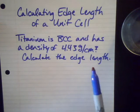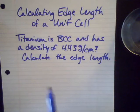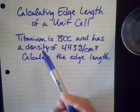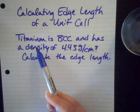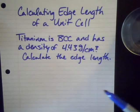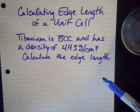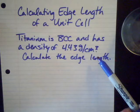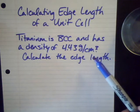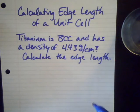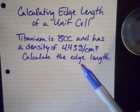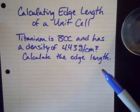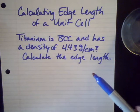So to calculate the edge length, we can solve problems that look like this. Titanium, which is Ti, is body centered cubic, and has a density of 4.43 grams per centimeter cubed. So grams per centimeter cubed, meaning our length times our width times our height, and we want to calculate the edge length of one unit cell.